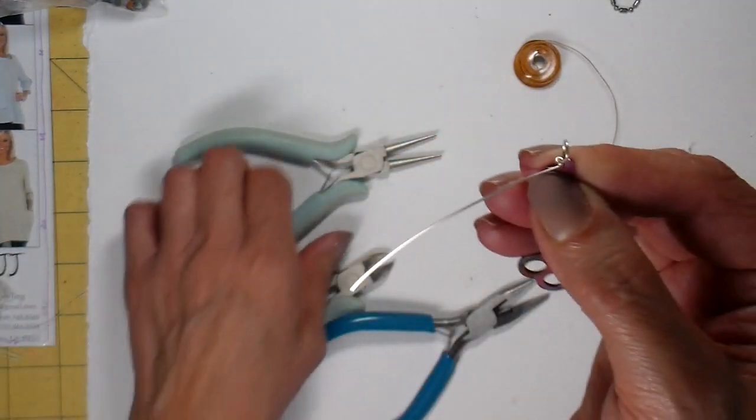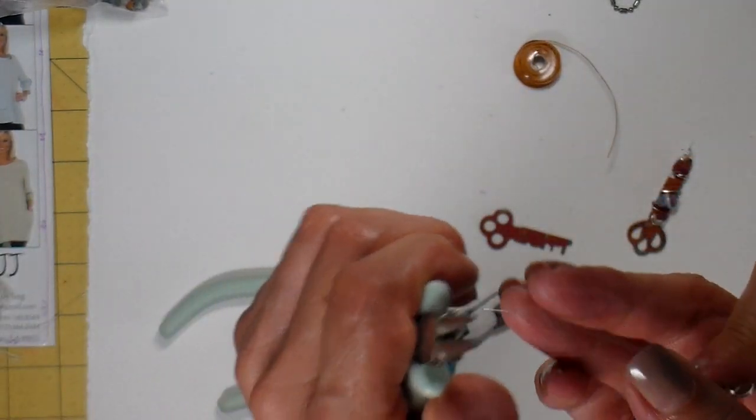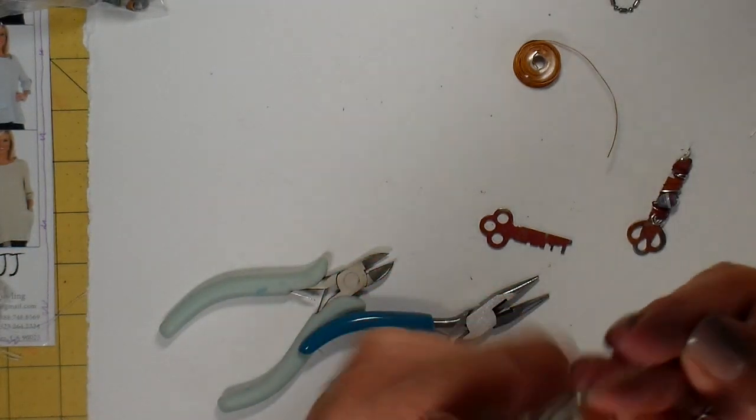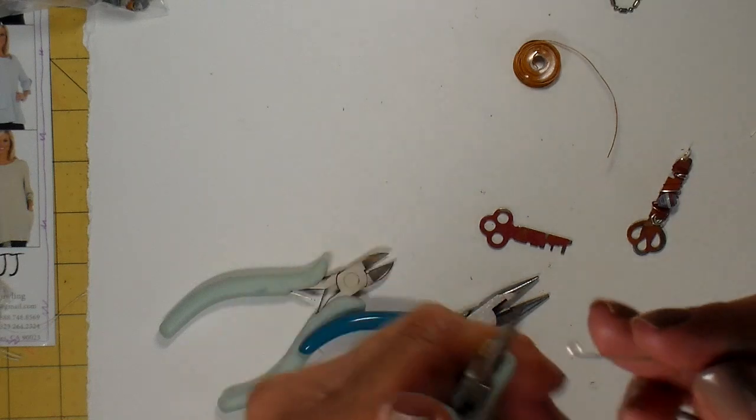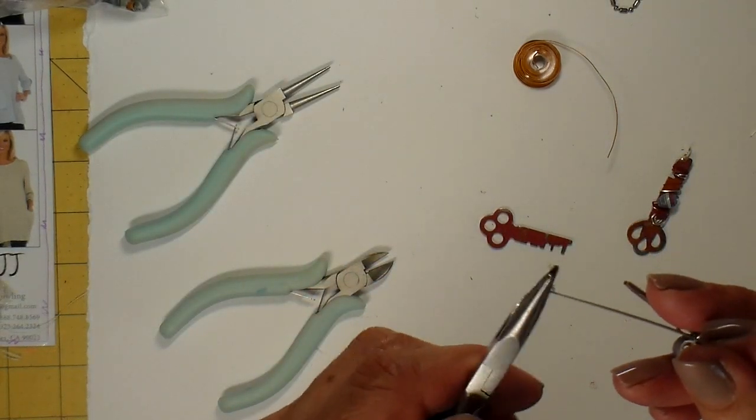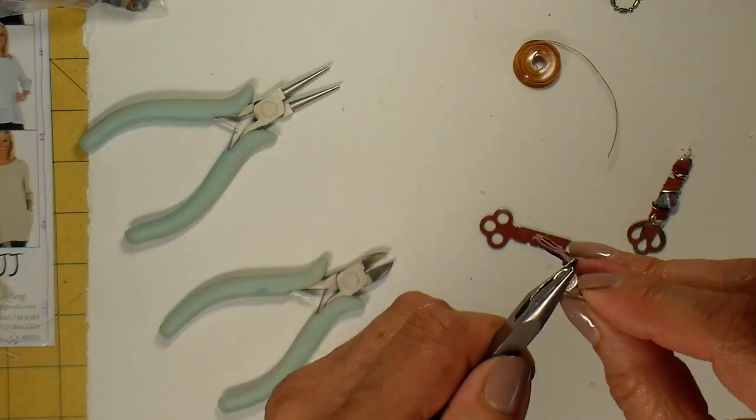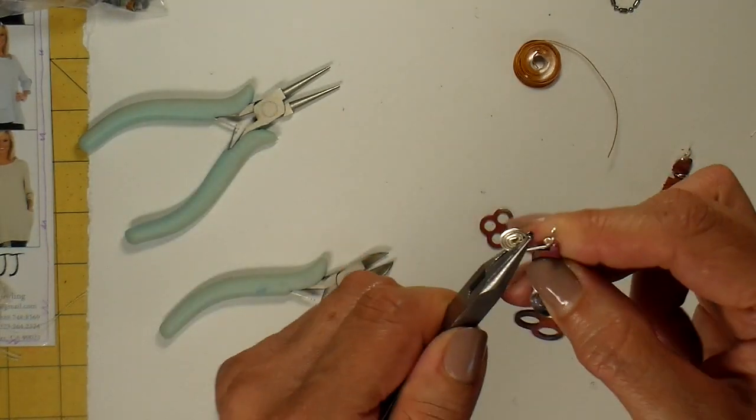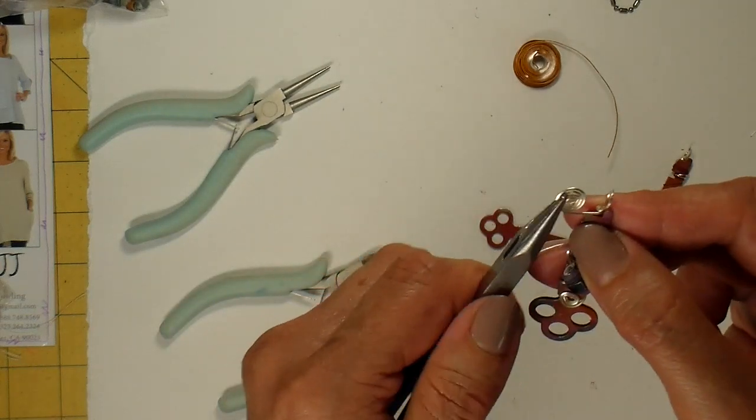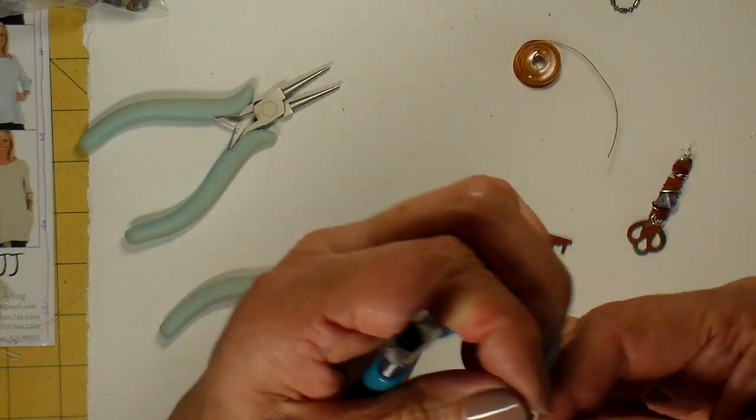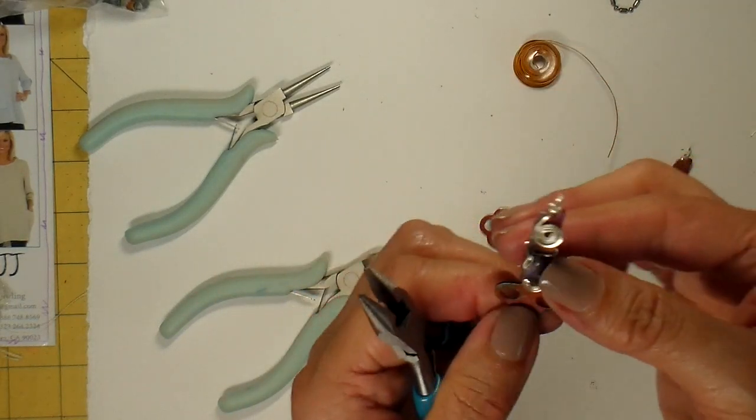On this tail, I'm going to again just form a loop and spiral it back on. Once my spiral is formed, I'm just going to bend that to the front. It just acts as decoration.